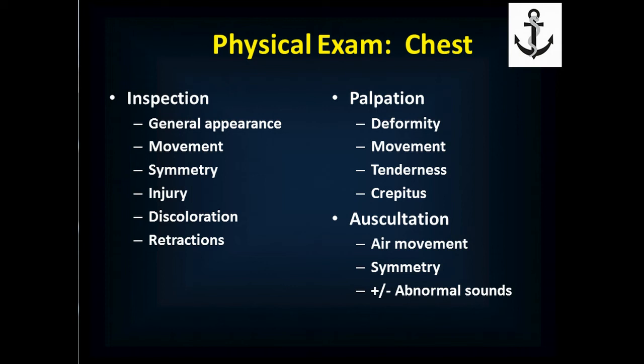Then you auscultate — you listen for air movement throughout the chest. You want to know if it's symmetric on both sides: are you hearing none on one side and some on the other, abnormal sounds on one side but not the other, or abnormal sounds in one part of the lung but nowhere else? Identify the abnormal sounds: wheezes are a high-pitched musical sound; rales are a crackling sound like rubbing hair between your thumb and index finger; and ronchi is a rumbling sound. If you can differentiate between those, describe them — otherwise just say you heard something unusual.